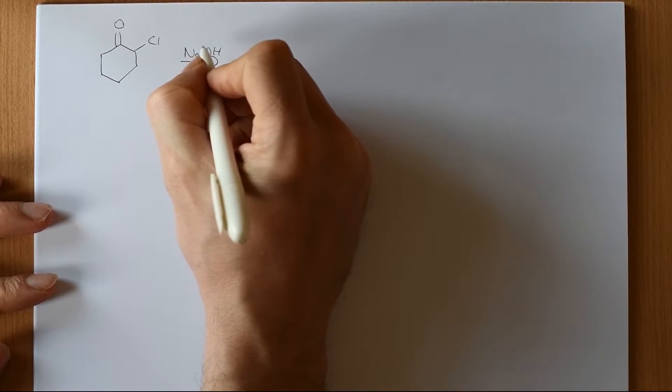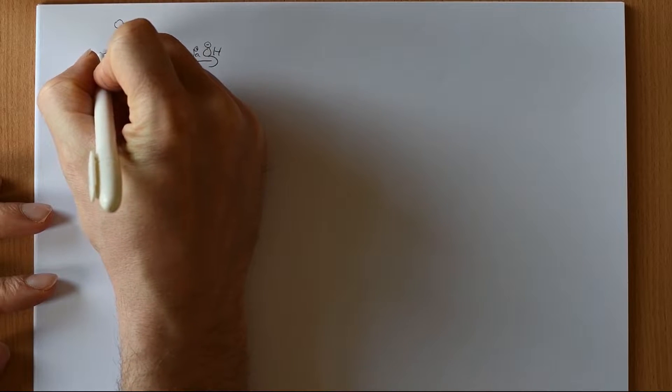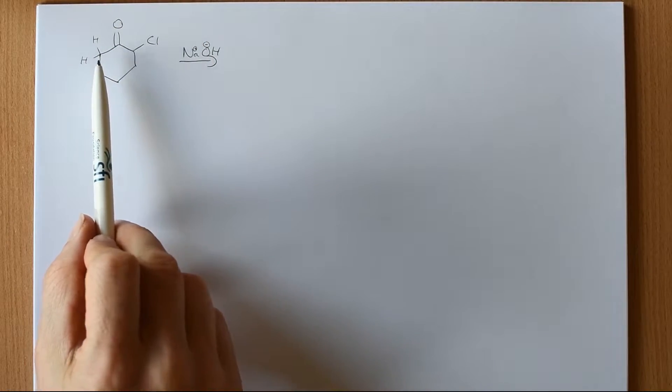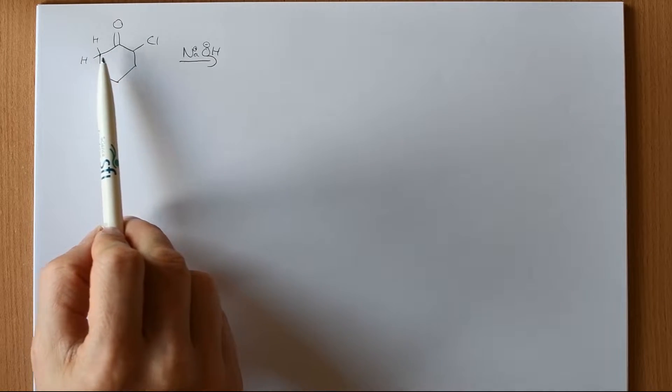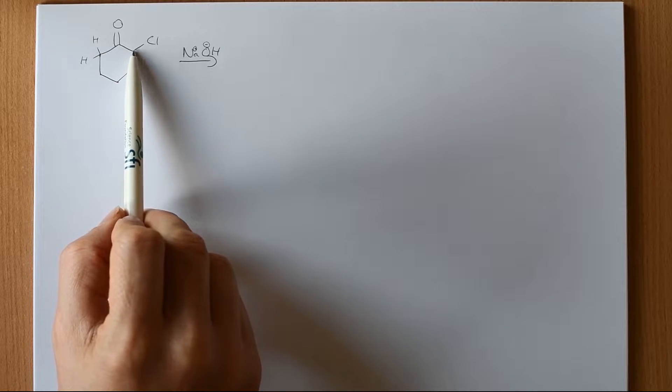So the first thing that happens is something that you should be very familiar with, which is that we form an enolate. So I'll draw in the positive and negative charges and I'll draw in the enolizable hydrogens. And the enolate always forms by abstracting or by deprotonating the carbon that is not the halogenated carbon.